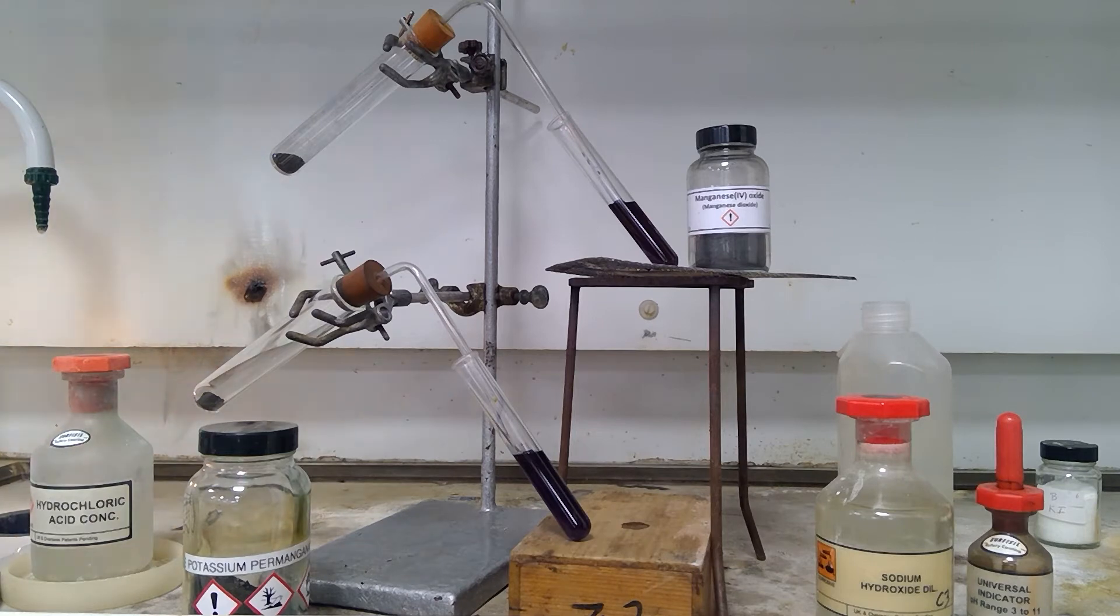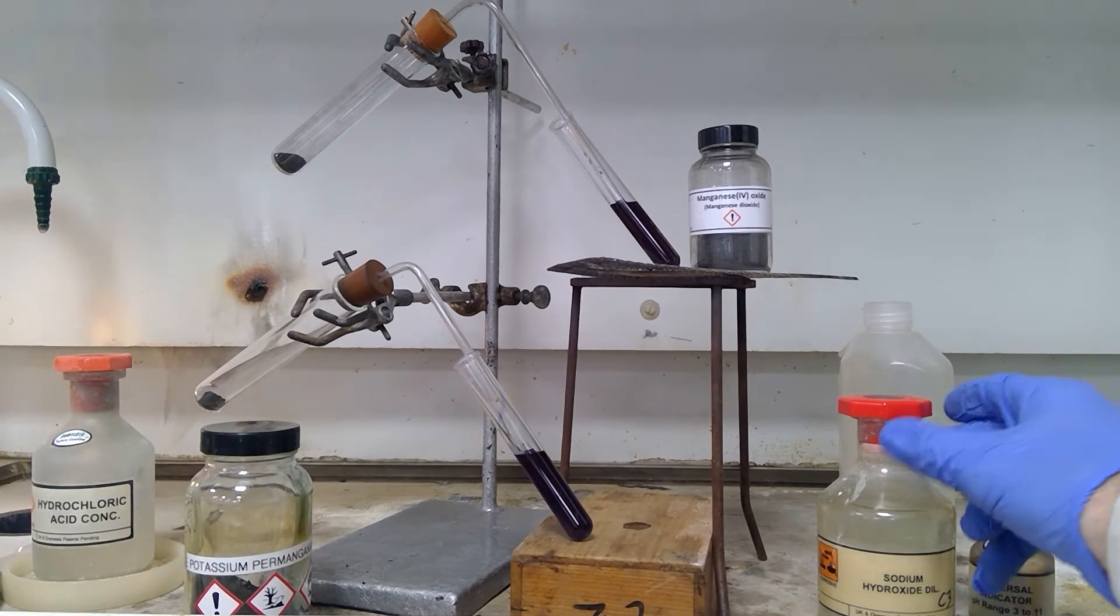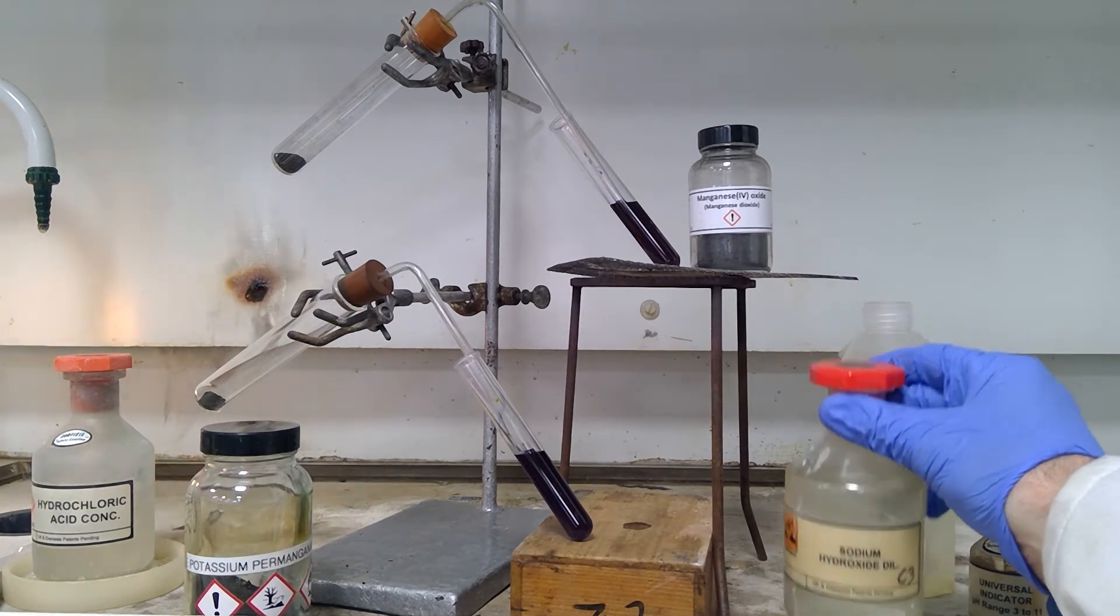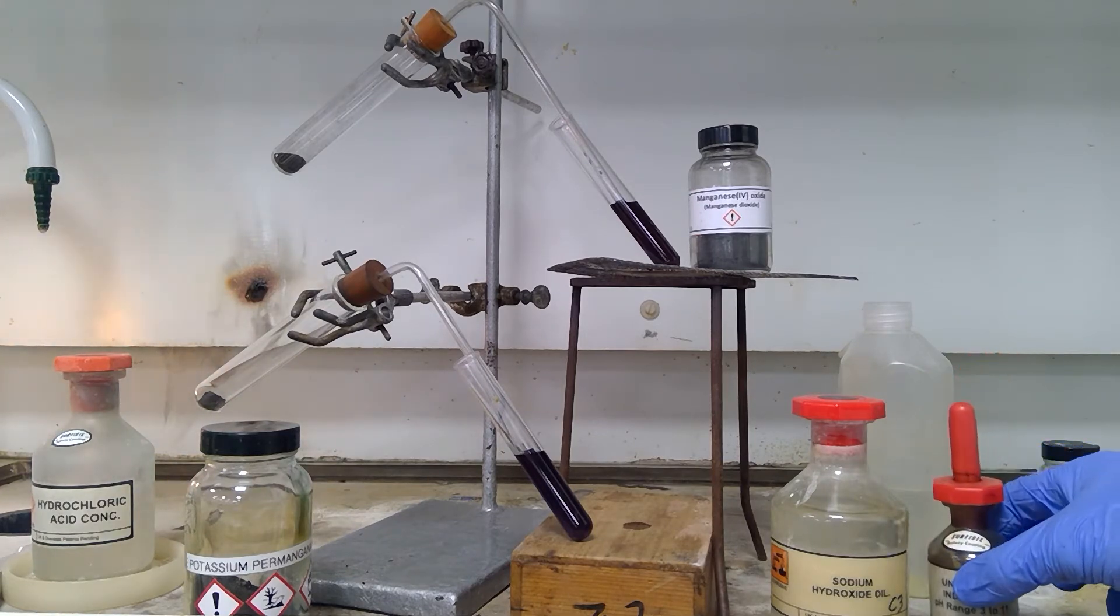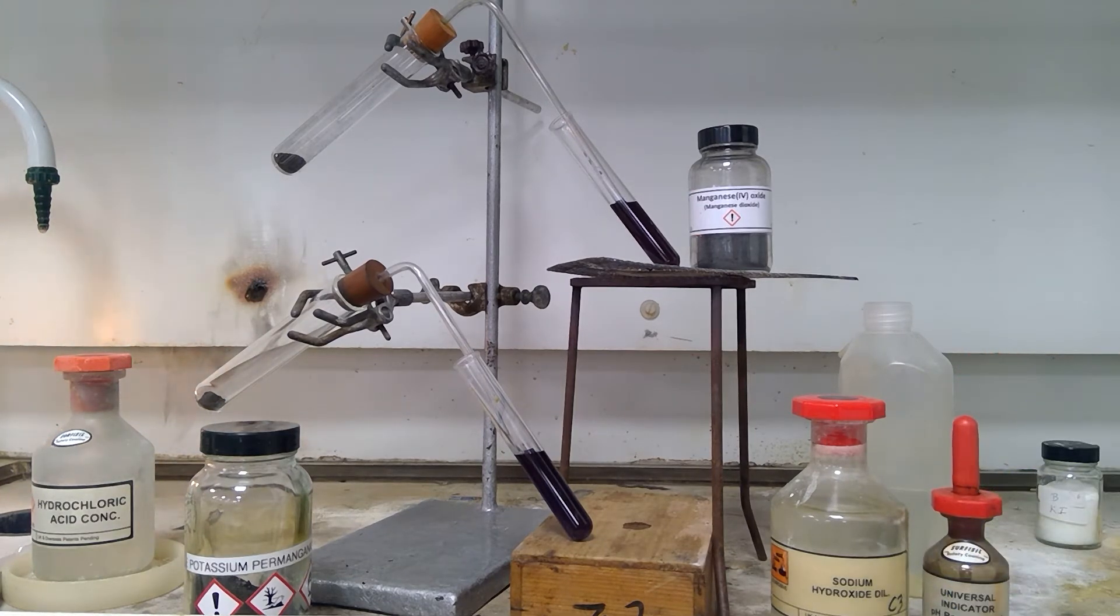In each case, some concentrated hydrochloric acid is going to be added. The gas evolved, chlorine, is then going to pass into some sodium hydroxide solution into which universal indicator has already been poured and added. Although the color is very dark, it is in fact a blue color.